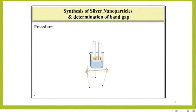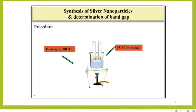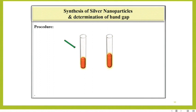Place the two hard glass tubes in a beaker containing distilled water. Then heat it up to 80 degrees centigrade for 15 to 30 minutes. Yellow color will appear if smaller size nanoparticles are present, and yellow-orange color will appear for the larger size. Then cool the solution slowly and wrap the two test tubes with silver foil to avoid sunlight exposure.